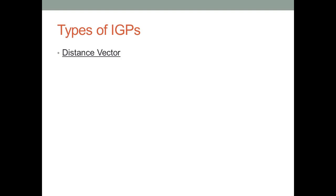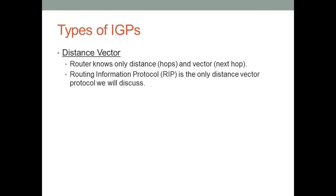There are two different types of interior gateway routing protocols. The primary one is distance vector — the router only knows the distance and vector, meaning the next hop to a given network. Distance could be comprised of many different components. RIP is the only distance vector protocol we'll be discussing, though I say that with a hint of something to come.